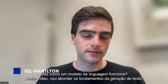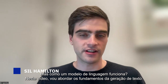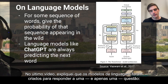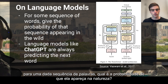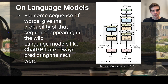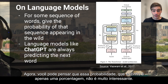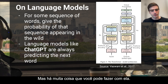But how does a language model work? In this video, I'll go through the fundamentals of text generation. Along the way, we'll learn what hallucinations are. In the last video, I explained language models are designed to do one thing and one thing only: for some sequence of words, what is the probability of that sequence appearing in nature? Language models are designed to produce this probability. Now, you might think that this probability on its own — just a percentage — isn't very interesting. But there's a lot you can do with it.